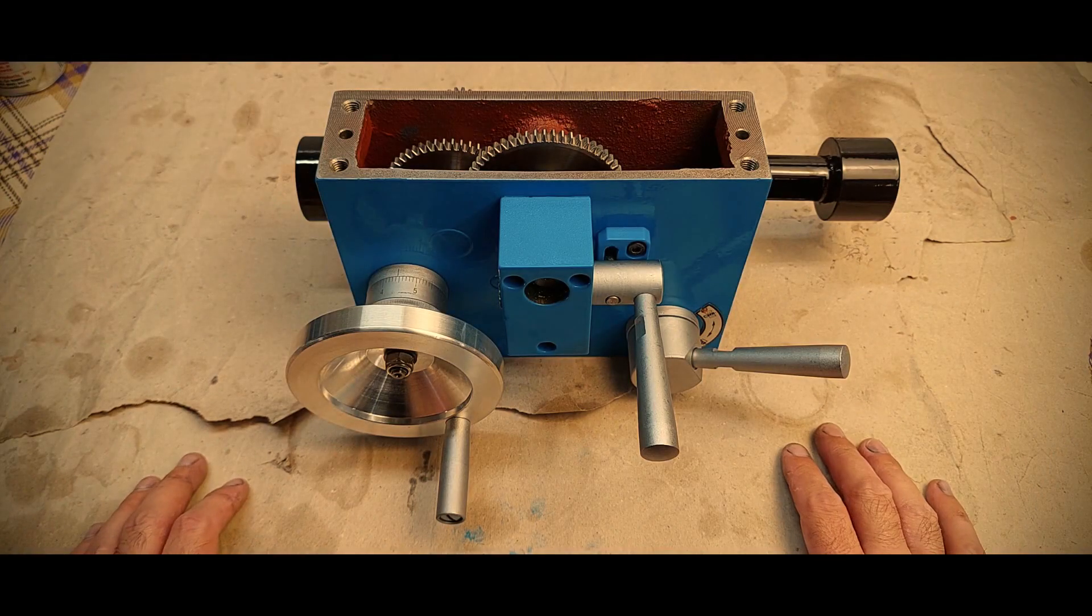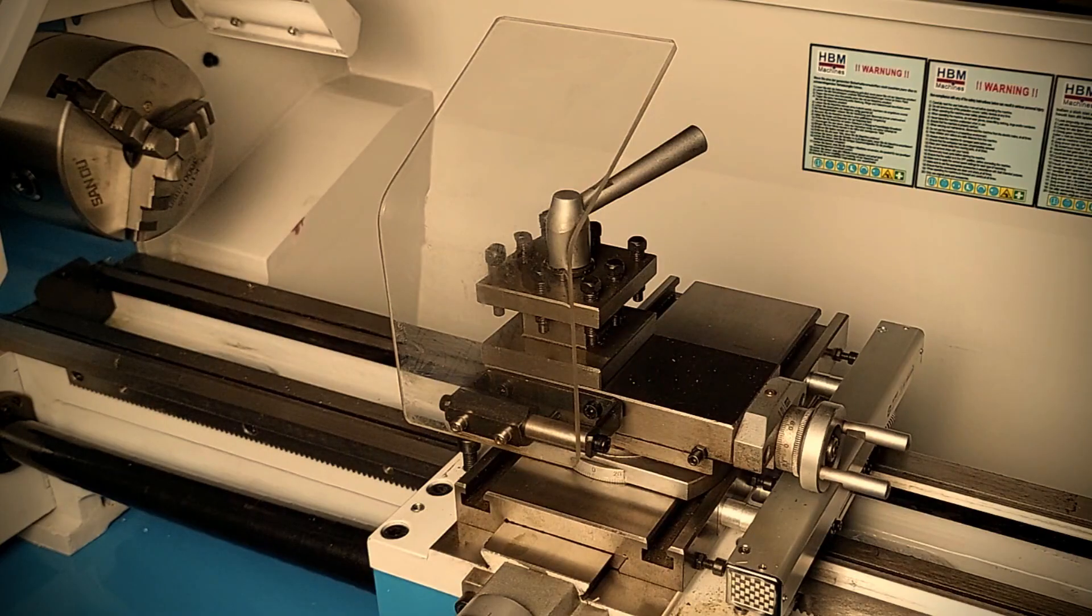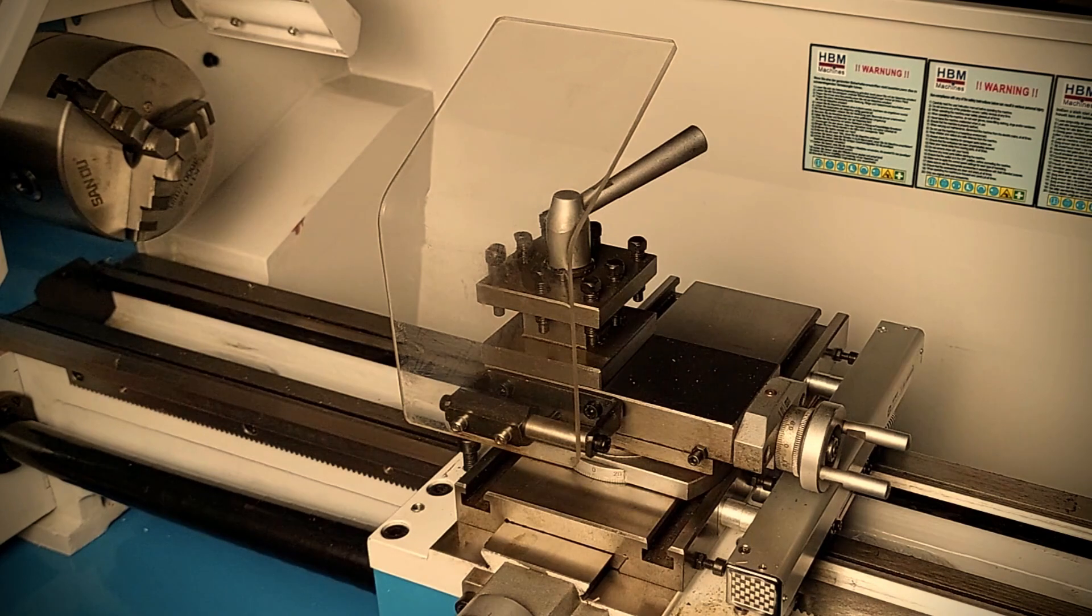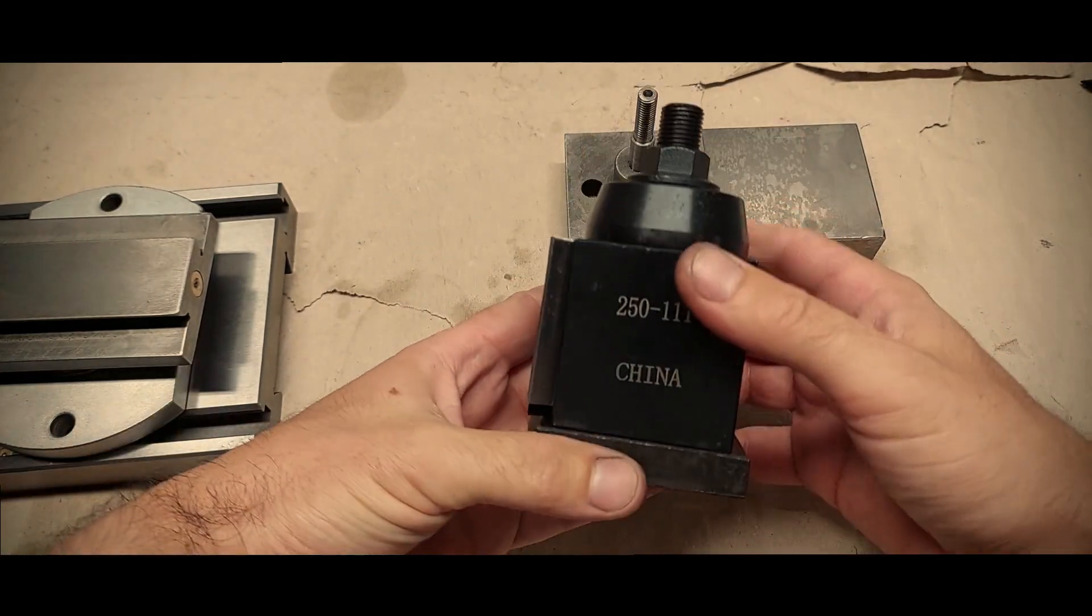Now that I got this out of my system, we can move on and talk about the toolpost. This lathe came with a 4-way toolpost from the factory, and I wanted to replace it with a quickchange type, so I got this one. This is an Aloriz AXA wedge-type replica made by China.